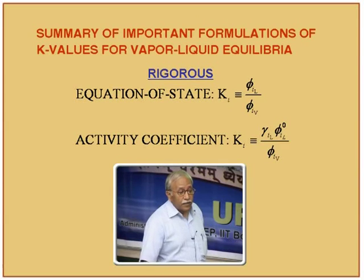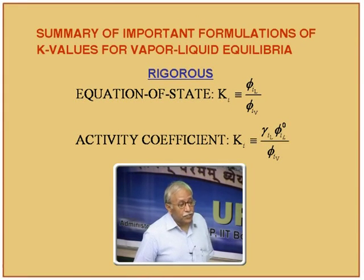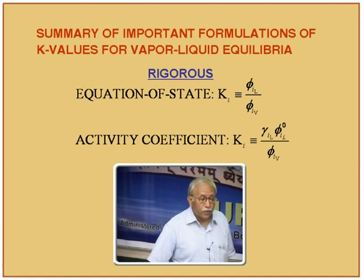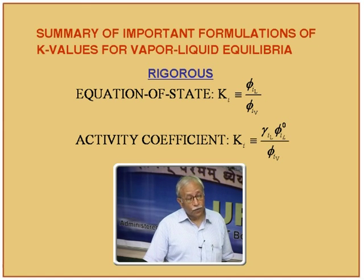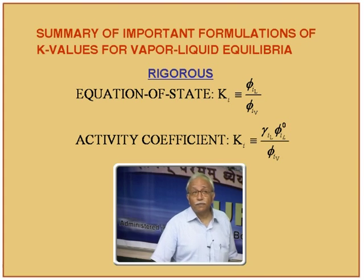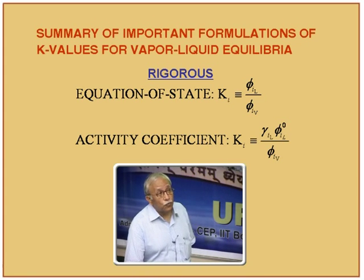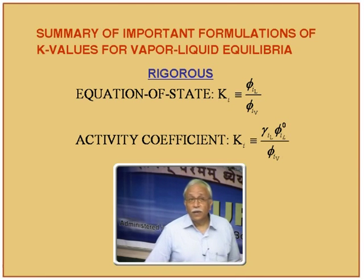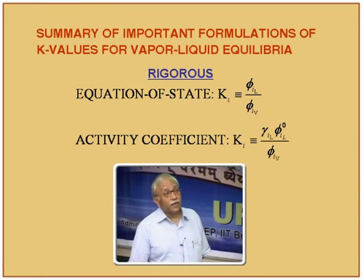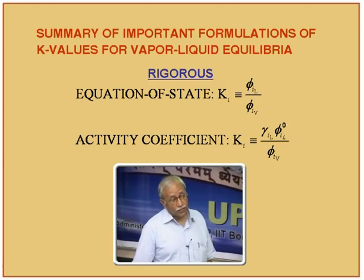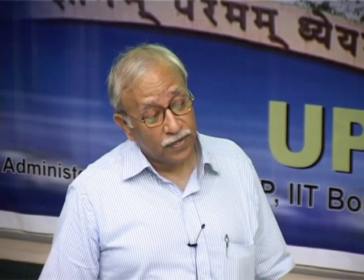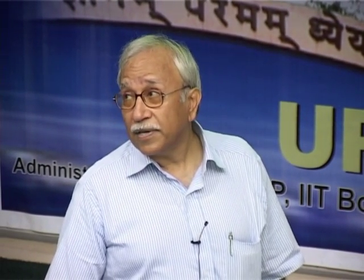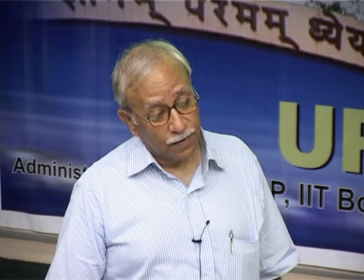This is known as the unsymmetric form, or use of liquid activity coefficient models for calculation of fugacities, which in turn enable calculation of K values. In summary: K = yi/xi can be calculated either from the ratio of two fugacity coefficients in the symmetric form, or from a combination of activity coefficient and fugacity coefficient in the unsymmetric form.